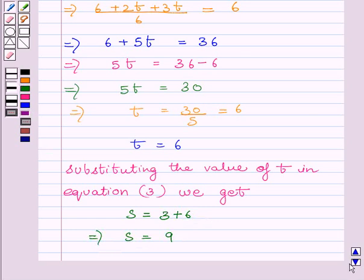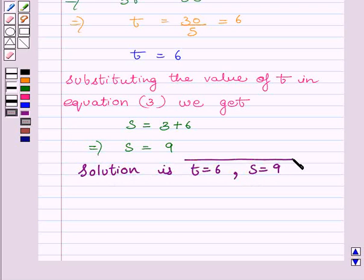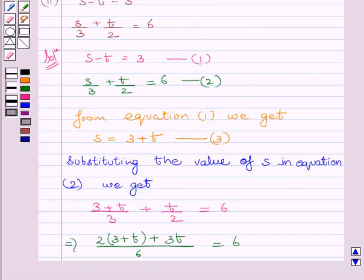Our required solution is t is equal to 6 and s is equal to 9. Substituting t is equal to 6 and s is equal to 9, we can verify that both equations 1 and 2 are satisfied. This completes the session. Hope you understood the session well. Goodbye and take care.